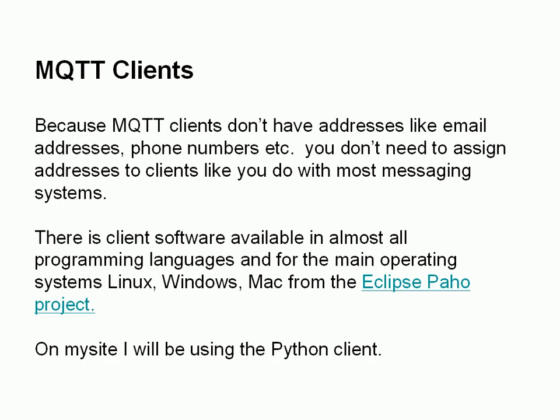MQTT clients don't have addresses like you find in most other messaging systems such as email and telephone, so you don't need to assign addresses to clients. Client software is available in most programming languages — Python, Java, JavaScript — and for all the main operating systems — Linux, Windows, and Mac. You can get them from the Eclipse Paho Project, and you'll find a link on the site.